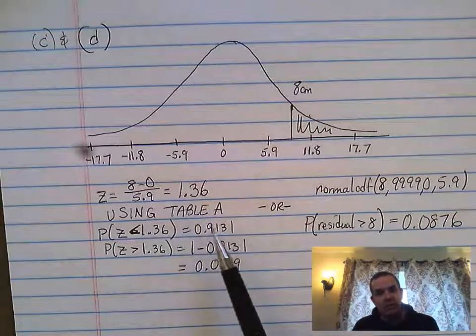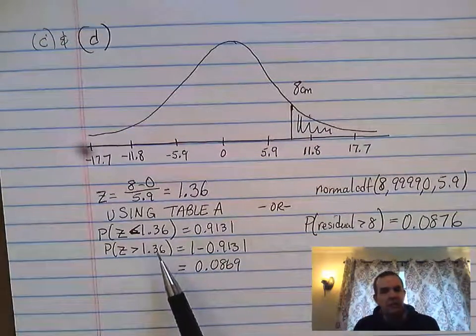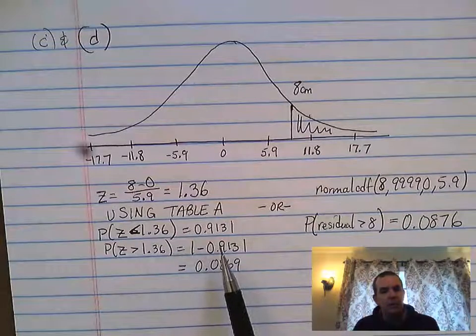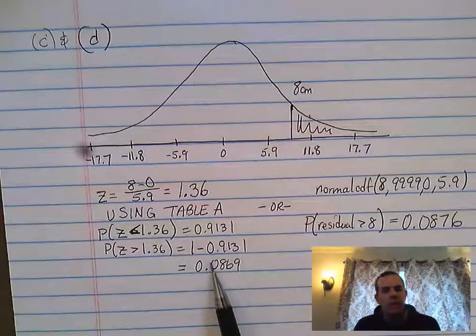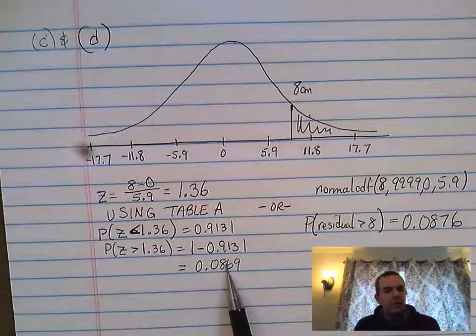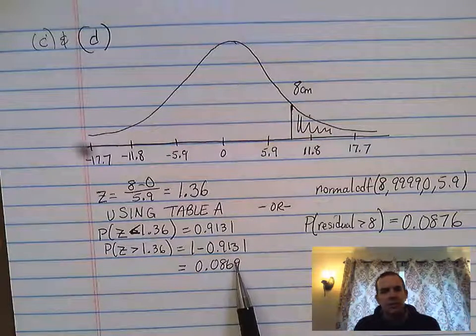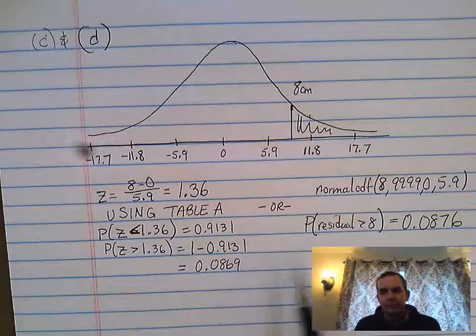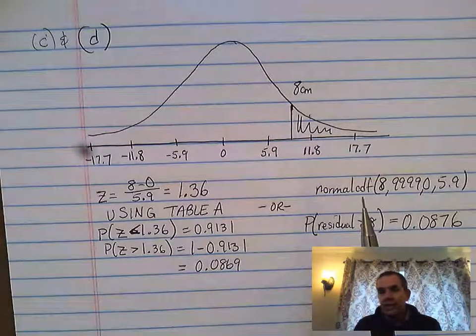To get the greater than, we take the complement: 1 minus 0.9131. That would give me a probability of about 0.0869, so a little bit less than nine percent.